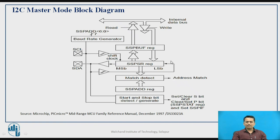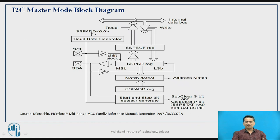In the master mode block diagram, when sending data, the data available in the file register is written to the SSP buffer. In synchronization with the generated clock, the SSPSR shift register converts that parallel data into serial form and sends it on the SDA line. When receiving data, the received serial data is first available in the SSPSR shift register, then transferred to the SSP buffer, from where you can read the received data onto the internal bus.